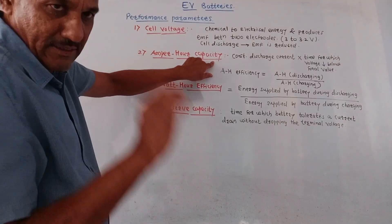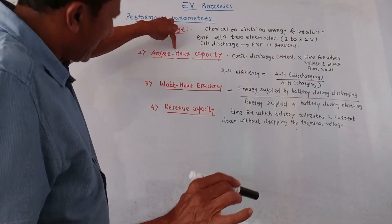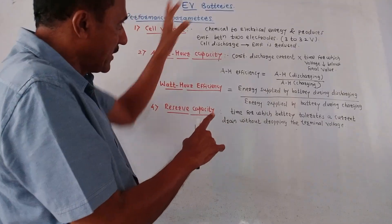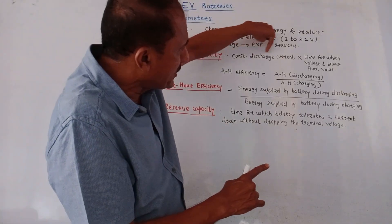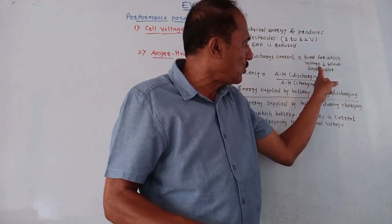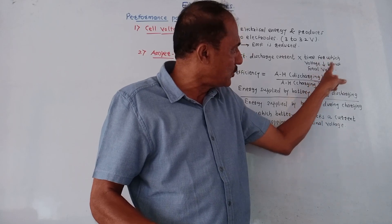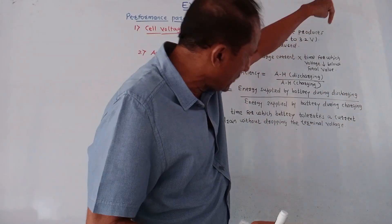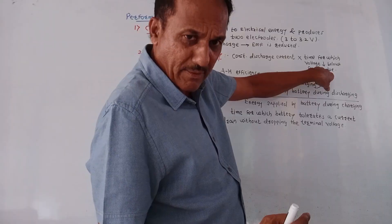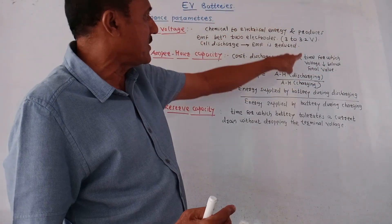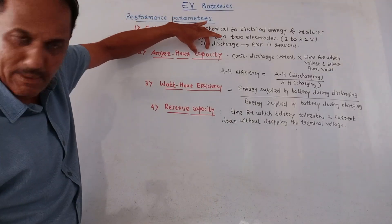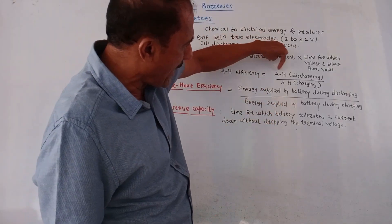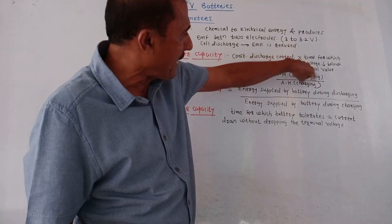Next is ampere hour capacity. It is the multiplication of constant discharge current and the time for which the voltage reduces below a final predetermined value. Related to this is ampere hour efficiency (AH efficiency), which is the ratio of ampere hour discharge to ampere hour charge.